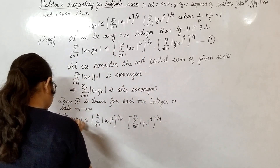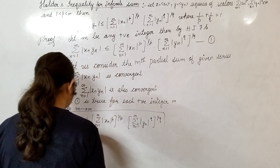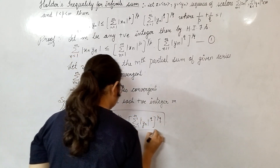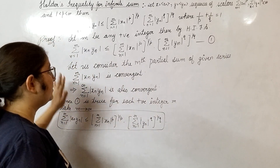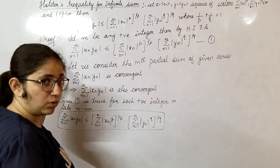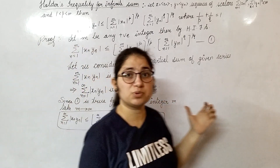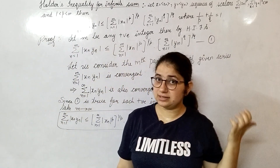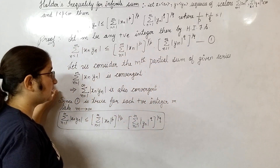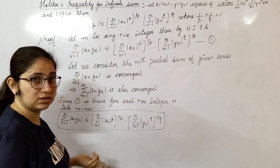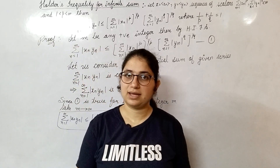This is your required result, which is Hölder's inequality for infinite sums. Maybe you are confused at this point, but if you try to understand this portion you will get it easily. If there is any doubt, you can message me or leave a comment. Thank you.